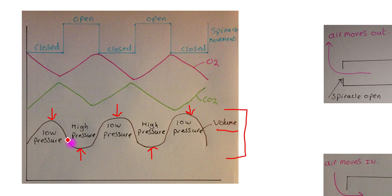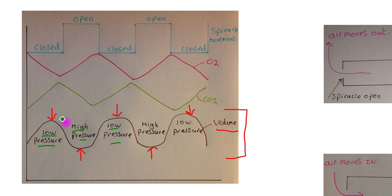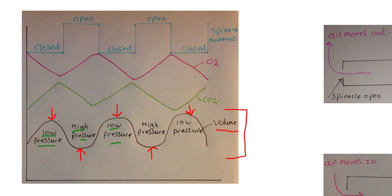Before explaining how the volume changes, it's important to note the relationship between volume and pressure. When you have a large volume, the pressure within the tracheal system is low. When the volume is high, the pressure is low. Conversely, when the volume is low, the pressure is high. This bottom graph is showing the ventilation movements, and I want to use additional diagrams to explain what's happening.